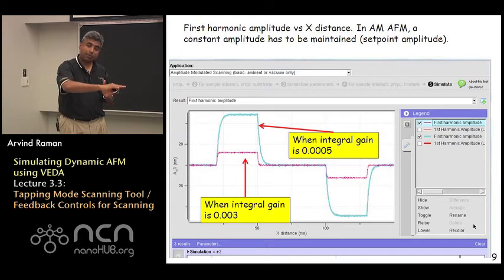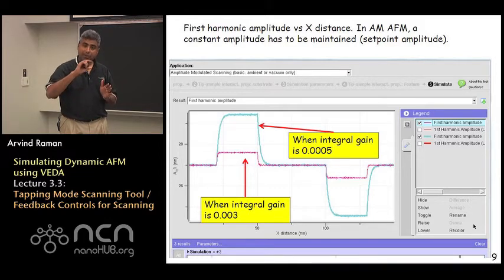However, when one hits the bottom flat part of the trench, the amplitude is what it should be. And then when one goes up the upward part of the ramp, the error signal flips and becomes lower.